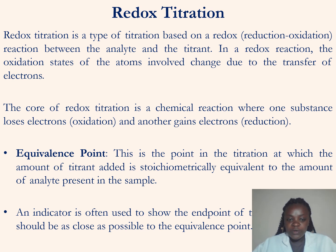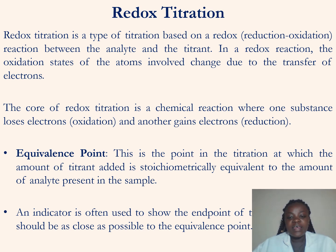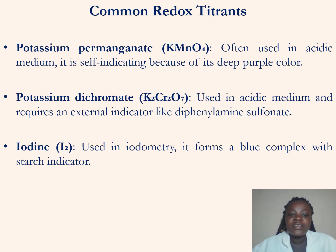Here we have a term to define: the equivalence point. This is the point in a titration at which the amount of titrant added is stoichiometrically equivalent to the amount of analyte present in the sample. Just as in direct titration, an indicator is used to determine the endpoint — the endpoint is when the change in color of the indicator shows that the reaction has already taken place. The endpoint should be very close to the equivalence point.